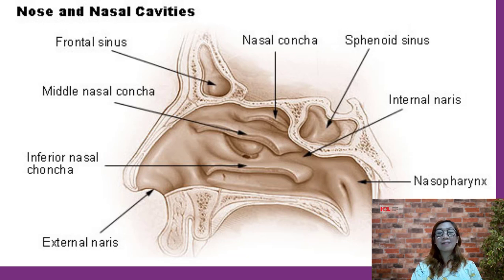Paranasal sinuses are the air-filled cavities in the frontal, maxillae, ethmoid, and sphenoid bones. These sinuses, which have the same names as the bones in which they are located, surround the nasal cavity and open into it. They function to reduce the weight of the skull, to produce mucus, and to influence voice quality by acting as resonating chambers.